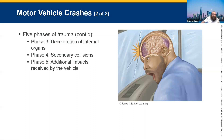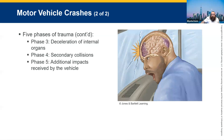Phase four is secondary collisions — stuff flying around the car. You may have a metal water bottle laying around that becomes a projectile and hits somebody in the head. Phase five is another vehicle hitting that vehicle because it went into the wrong direction or wrong lane, or the vehicle got deflected into a tree or something else causing further injury. This is called the five phases of MVAs.